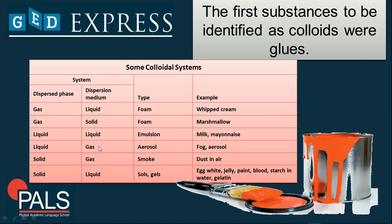Liquid dispersed in gas is known as an aerosol — it could be fog or an aerosol spray. Solid dispersed in gas could be smoke; an example is soot in air. Solid dispersed in liquid gives you sols or gels — examples include egg white, jelly, paint, blood, starch in water, and gelatin.